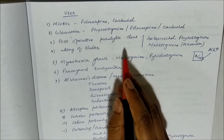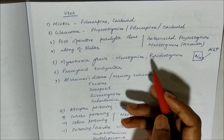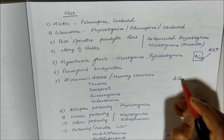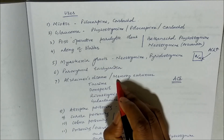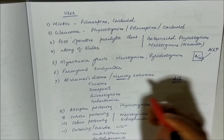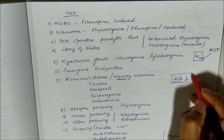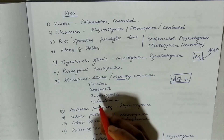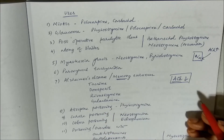All these drugs produce bradycardia on the heart, so in cases of paroxysmal tachycardia, we can use these drugs. Additionally, memory is a cholinergic function, and in Alzheimer's disease or dementia there is a decreased level of acetylcholine. To counteract this, we increase acetylcholine levels using anticholinesterases like tacrine, donepezil, rivastigmine, and galantamine.